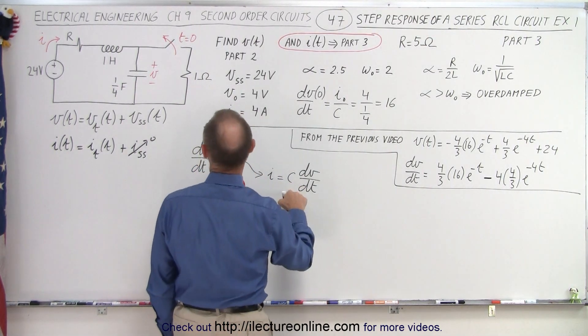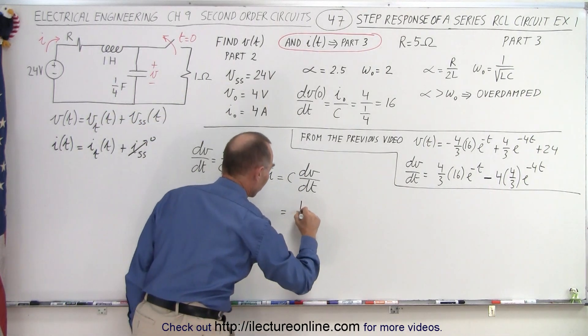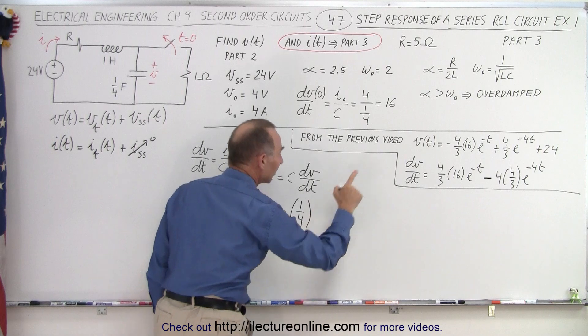In this case, that's equal to the capacitance, and the capacitance is right here, one-quarter of a farad, so it's one-quarter times dV/dt.